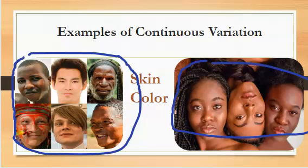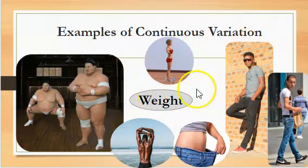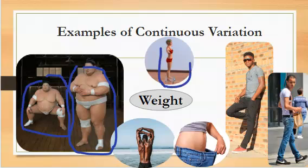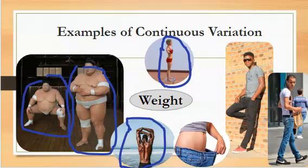Another example is weight. Our brothers right here are overly blessed when it comes to weight, as you can see. I think they are in sumo — it's a Japanese sport, kind of like wrestling. And we have a lady here trying to watch her weight through exercise, and this gentleman is very muscular.